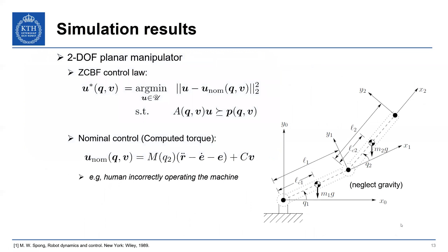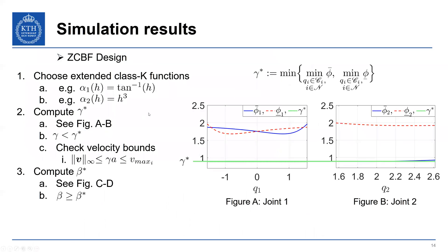So for some simulation results, here we have a two degree of freedom manipulator. We have our ZCBF control law that I've defined before, and we're going to implement some nominal control that's a computed torque. And the idea here is we're going to create a reference that represents a human that's incorrectly operating the machine that tries to take the system outside of the safe sets. So how do we do this?